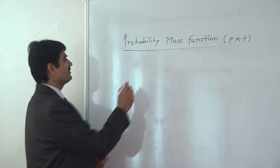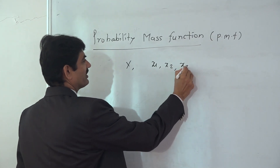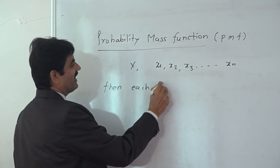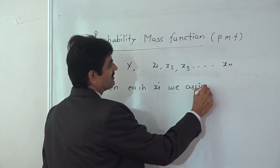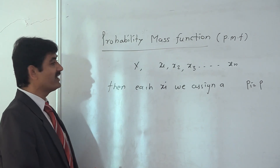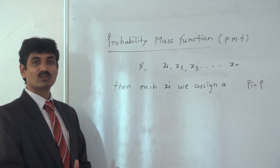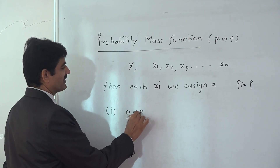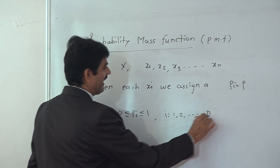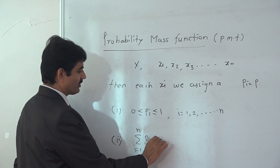Probability mass function: if a discrete random variable X takes the values X1, X2, X3, ..., Xn, then for each Xi we assign a number Pi which is equal to P — that is, the probability of each Xi. It is said to be a probability mass function if it satisfies two main conditions. Number 1: the probability always lies between 0 to 1 for all i running from 1 to n. And number 2: the sum of probabilities over i from 1 to n is always equal to 1.